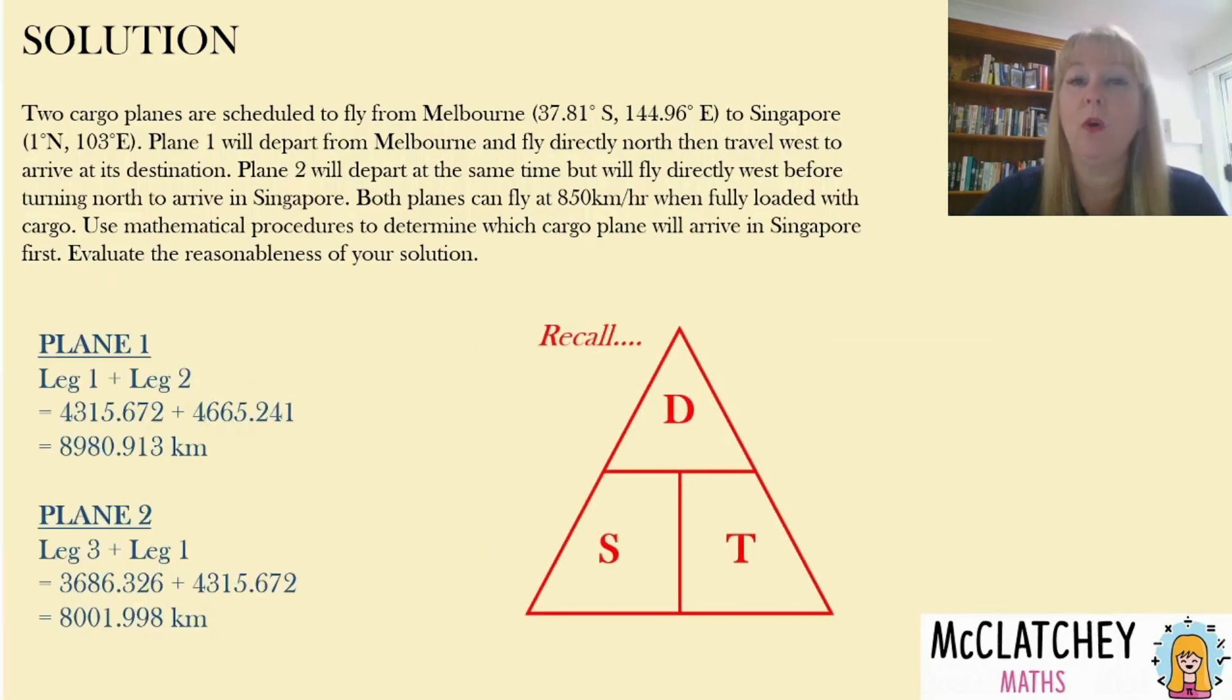So let's now recall because we need to work out who's going to get there first, not just we know it's going to be plane two is going to get there first, but we should be giving how much by. So we're going to recall that distance divided by time gives us our speed and so on. We've used that since grade eight so hopefully you've remembered that one because you will get sometimes questions with speed and time.